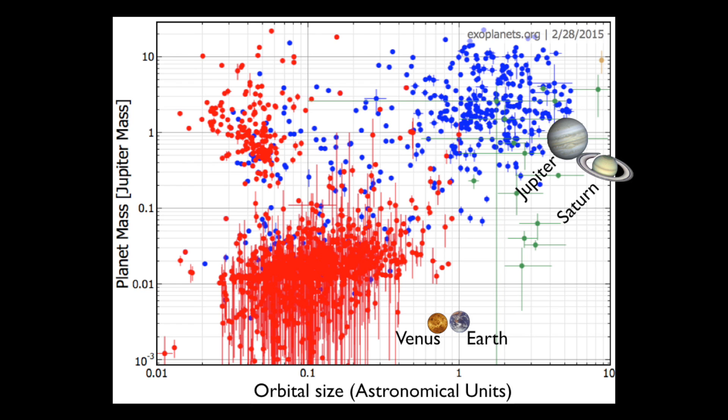The next step is to ask how common are Jupiters? And what this plot shows is a distribution of the known planets around other stars. So each dot here is a specific planet around another star. The vertical axis shows the planet's mass and the horizontal axis shows the size of its orbit. The color corresponds to how it was found, the technique used to find it.